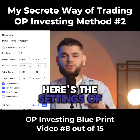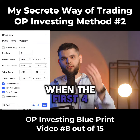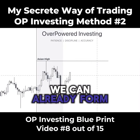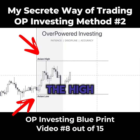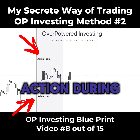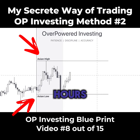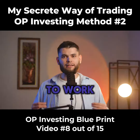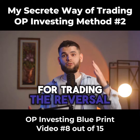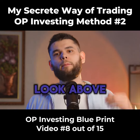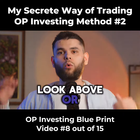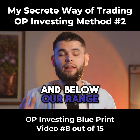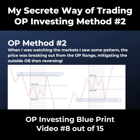Here are the settings of my indicator. When the first four hours have passed, we can already form our range. We have to draw the high and the low of the price action during those four hours. Those levels are going to work as our reference point for trading the reversal. Next, we have to look above and below our range and look for the supply and demand levels — that might be the order block or some swing high or swing low. After we have marked them up, everything is ready.